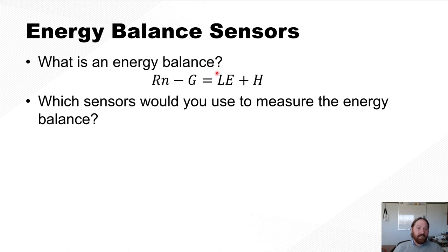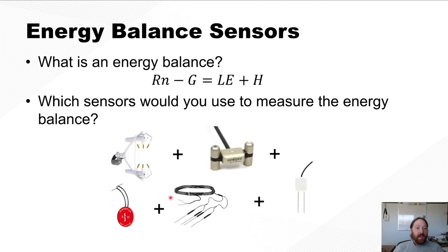Which sensors would you use to measure an energy balance? Well, you'd use an Irgason or EC150, CSAT3A, or a CPEC 300, 306, or 310 to measure the latent heat and the sensible heat. You'd measure the net radiation with a four-way net radiometer or just a net radiometer.